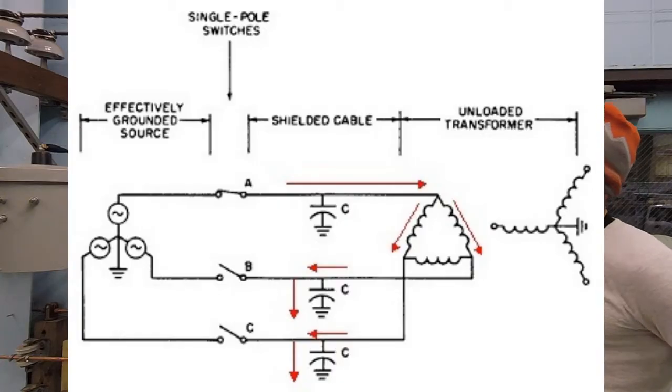The capacitance, in the case of a distribution lineman, often comes from the shunt capacitance introduced by underground URD cable. This is the type of cable we use to feed our underground circuits.